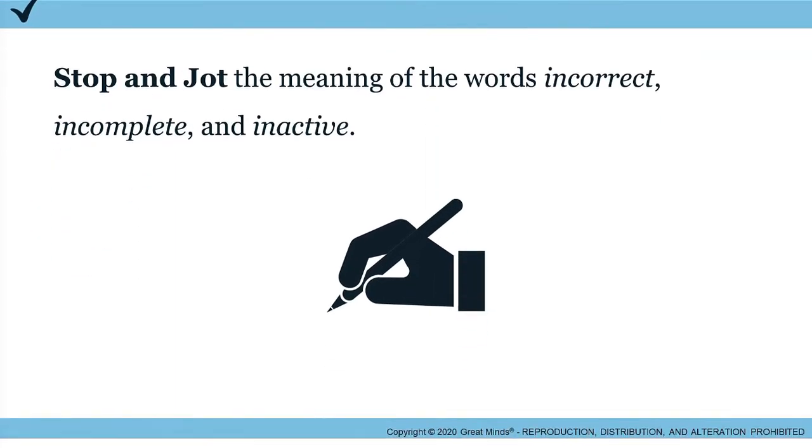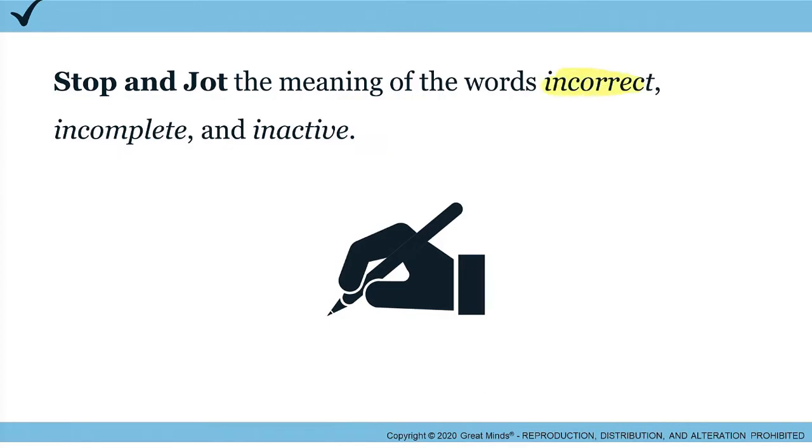You have three words to add to your response section: incorrect, incomplete, and inactive. So in your notebook, I'll add a page and pretend I'm writing in my notebook. In your notebook, we are going to write what these three words mean. Okay, so our first word is incorrect.